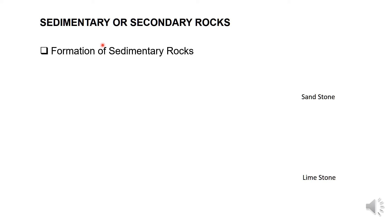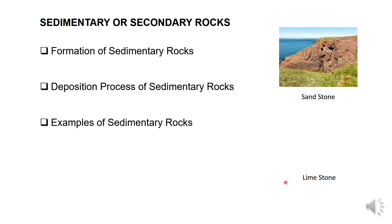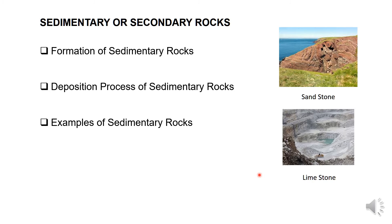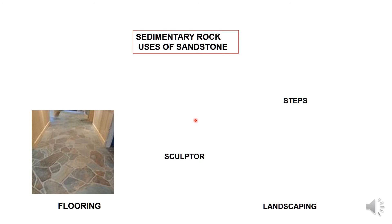Sedimentary rocks are formed by depositing sediments near rivers and lakes. When sediments lose water, they are converted into rocks. The deposition process of sedimentary rocks makes them strong. These rocks are porous in nature, soft and easy to cut. Examples of sedimentary rocks are sandstone and limestone. Sedimentary rocks are also used as cement, sand, and gravel, and as flooring material.